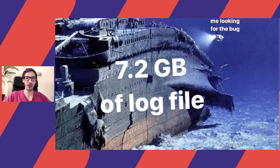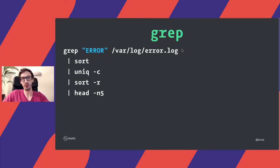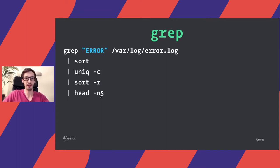That worked until you have a very large log file and you're basically like a little submarine trying to find anything in a huge Titanic-sized log file. So we had to switch our tools a bit. One way to do that is `grep`, where you can say you have an error and want to find that error in the log file — not just find the error, but find the most common or unique errors. So you sort on unique lines recursively and get the top five, giving you the top five unique errors from your log file.